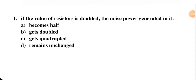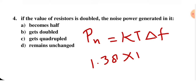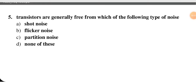Next question: if the value of resistance is doubled, the noise power generated becomes half, gets doubled, gets quadrupled, or remains unchanged. The formula for noise power is Pn = kTΔf, where k is Boltzmann's constant (1.38 × 10⁻²³ J/K), T is room temperature in Kelvin, and Δf is bandwidth. There is no resistance term in this formula, so doubling resistance cannot affect noise power — it remains unchanged. D is the correct option.